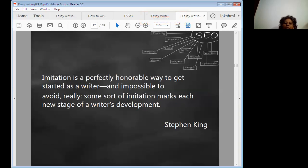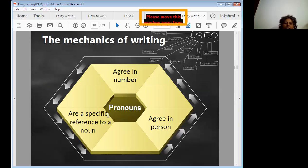Here you see, you have already read one quotation. Now see Stephen King: 'Imitation is a perfectly honorable way to get started as a writer and impossible to avoid, really. Some sort of imitation marks each new stage of a writer's development.' So you can imitate your favorite author.